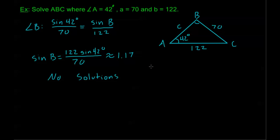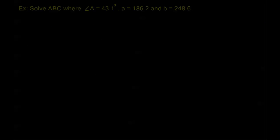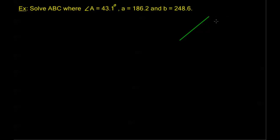The key to knowing whether we have one, two, or no solutions is all about the angle opposite the side that we're given where that angle is unknown. This angle gives us the information we need. Let's look at one more example: solve triangle ABC where angle A = 43.1°, side A = 186.2, and side B = 248.6.